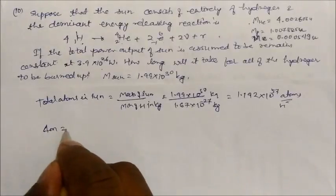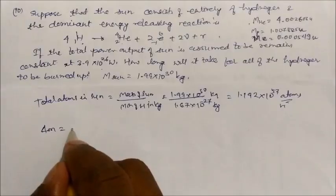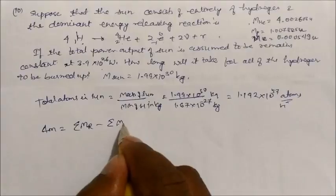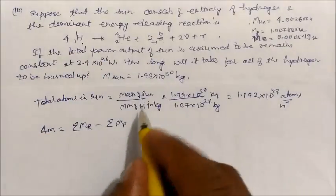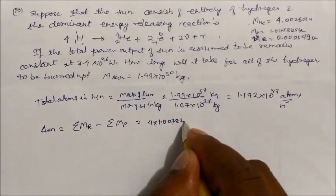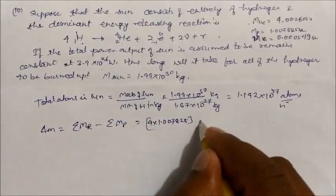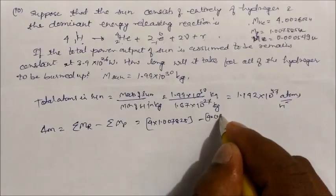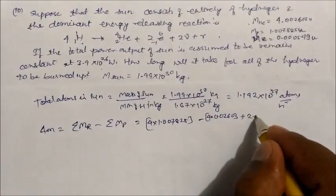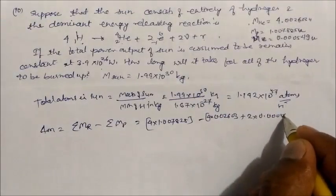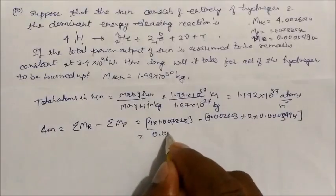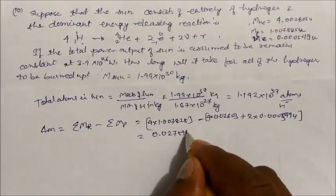Now calculate the mass defect per reaction. Total mass defect = reactant mass − product mass = 4 × 1.007825 − (4.002603 + 2 × 0.000549) u. On solving you get 0.027599 u. This is the total ΔM per reaction.